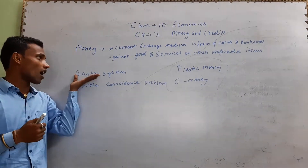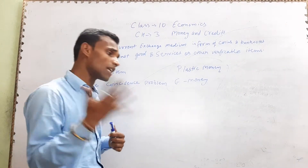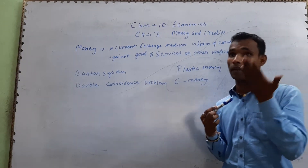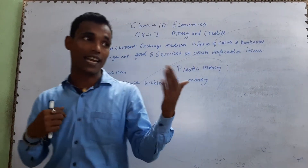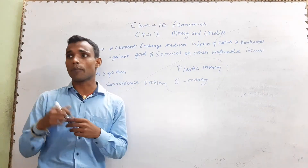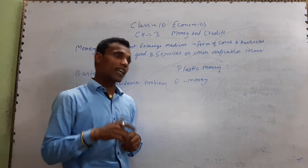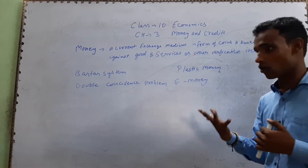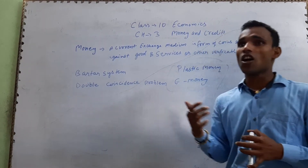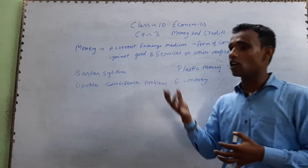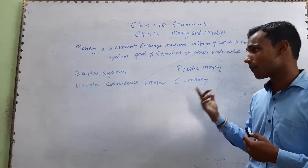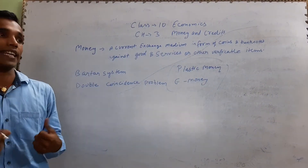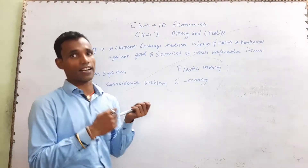There is the barter system. What is the barter system? It has a lot of problems. We can exchange some things or objects for other things. For example, there is a cobbler and a farmer. The cobbler needs grain, so he goes to tell the farmer to give him grain. But the farmer already has grain and needs shoes instead, so the farmer will only exchange if both needs match.